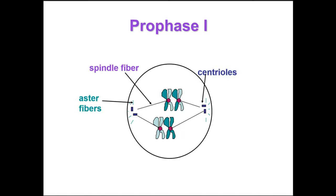Meiosis begins with meiosis one. The first part of meiosis one is prophase one. Prophase one typically occupies more than 90% of the time required for meiosis. Chromosomes begin to condense and in synapsis, homologous chromosomes loosely pair up, aligning gene by gene. In crossing over, the chromosomes that are aligned gene by gene will exchange DNA segments between the non-sister chromatids. Each homologous pair has one or more X-shaped regions called chiasmata, which exist at points where crossing over has occurred.